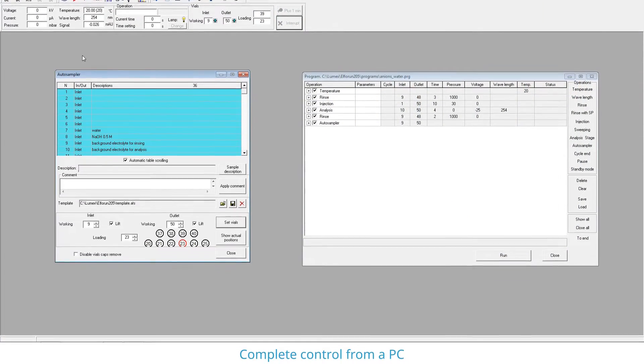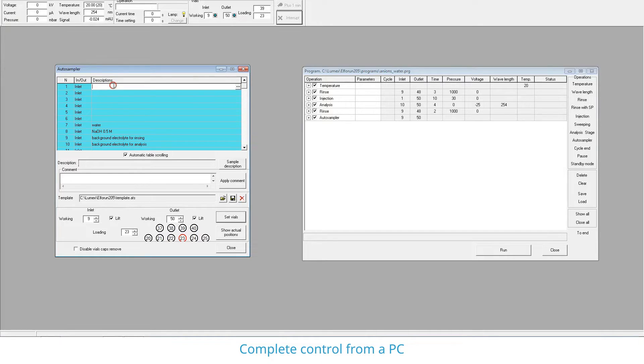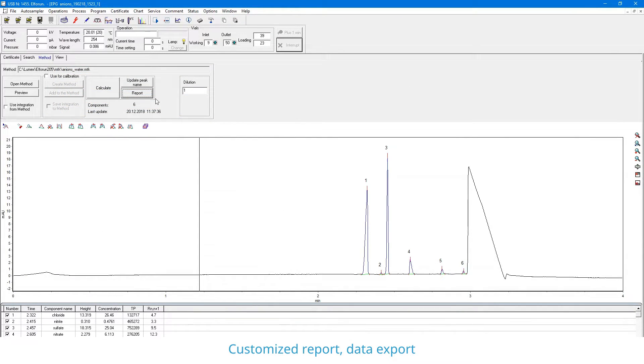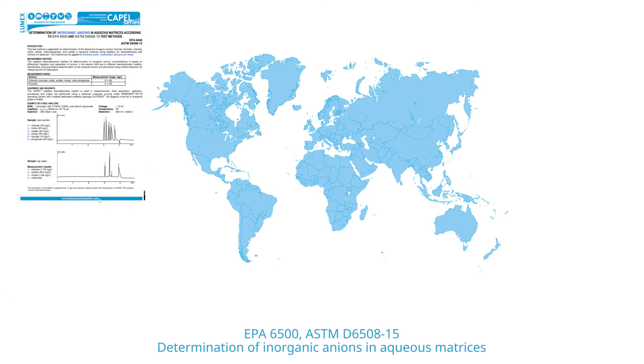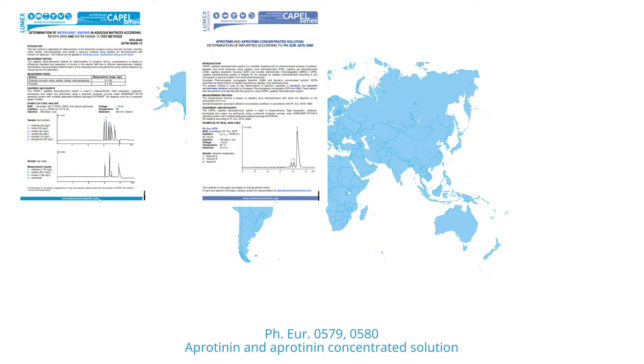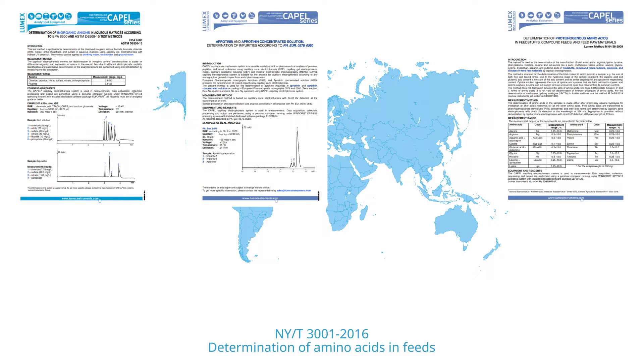CAPEL 205 is run by the powerful and user-friendly ELFO-run software that controls the instrument and acquires and processes the data. Another advantage is the wide library of validated standard operating procedures that can be run on one instrument.